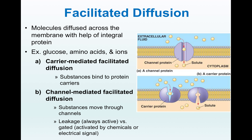If you still want to use diffusion but cannot pass the molecule directly through the plasma membrane, you can use the integral proteins that are built in. One of these mechanisms is carrier-mediated facilitated diffusion. Substances bind to the protein, the protein changes its shape and allows the molecules to come through — from high concentration on one side to low concentration on the other side. The word 'facilitated' implies the use of integral proteins for the movement or diffusion of molecules.